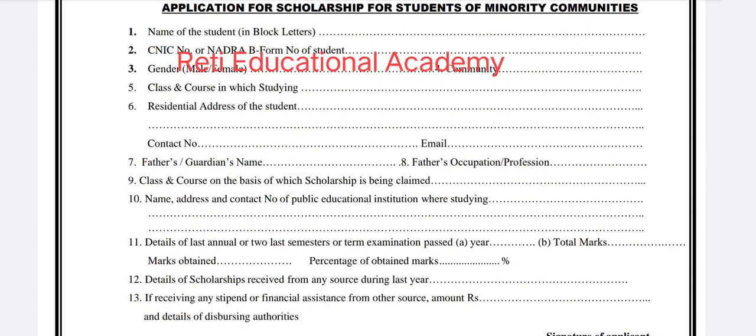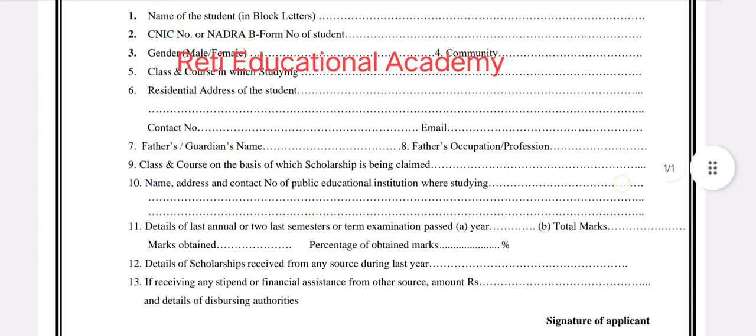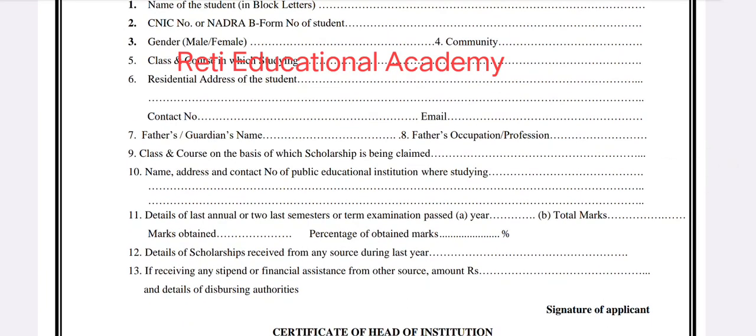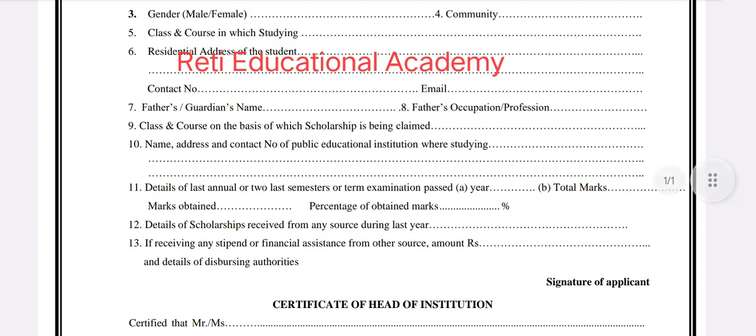Number 7 is the father's or guardian's name and their profession. Number 9 is the class and course on the basis of which the scholarship is being claimed. Number 10 is the name, address, and contact number of the public educational institution where you are studying.